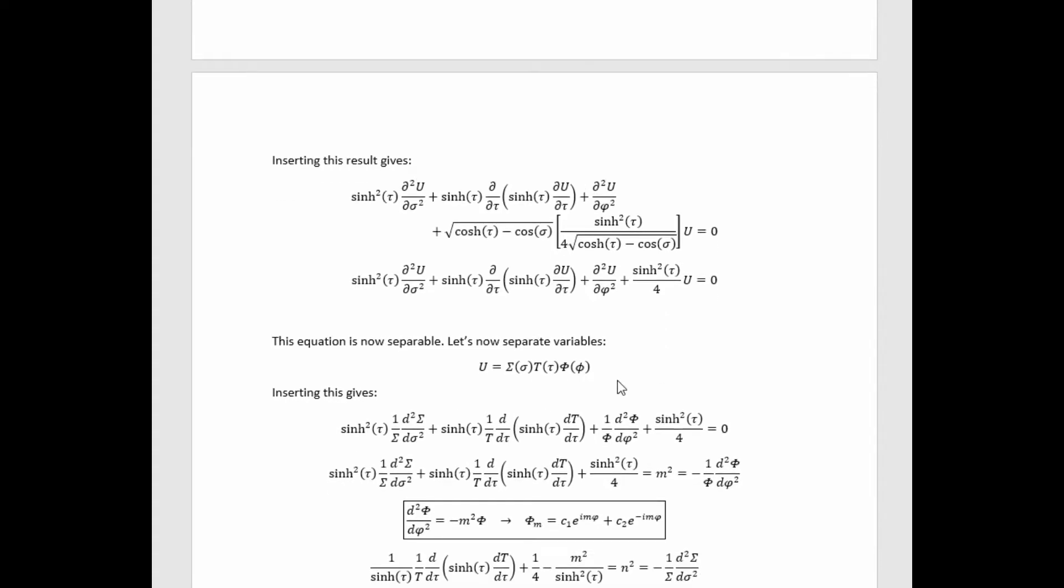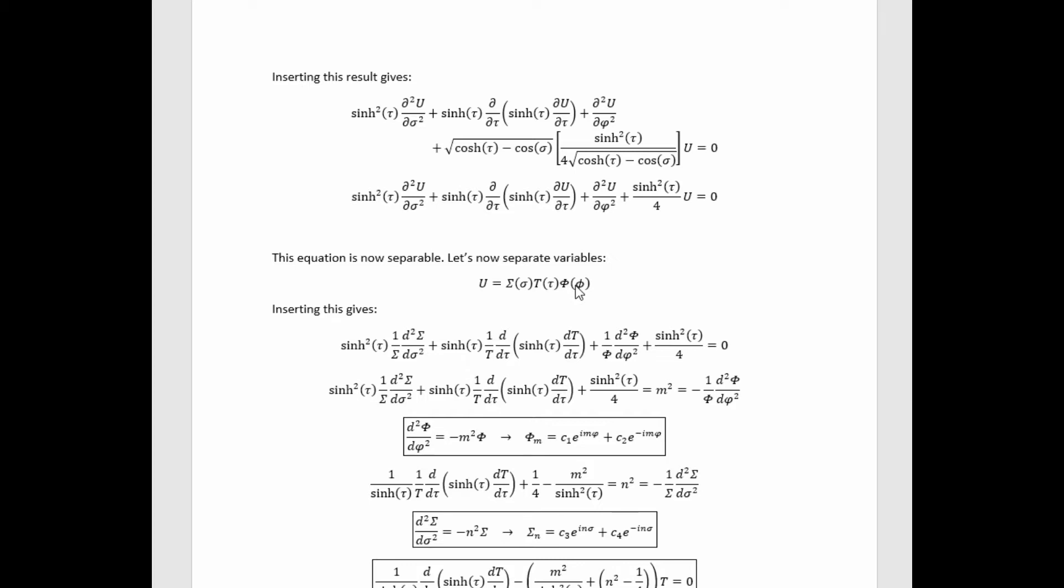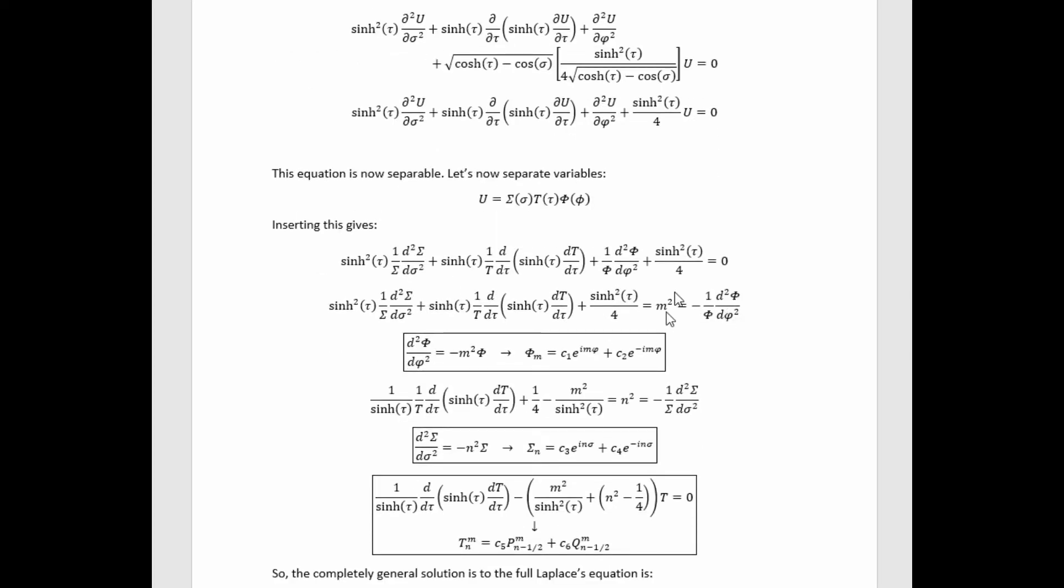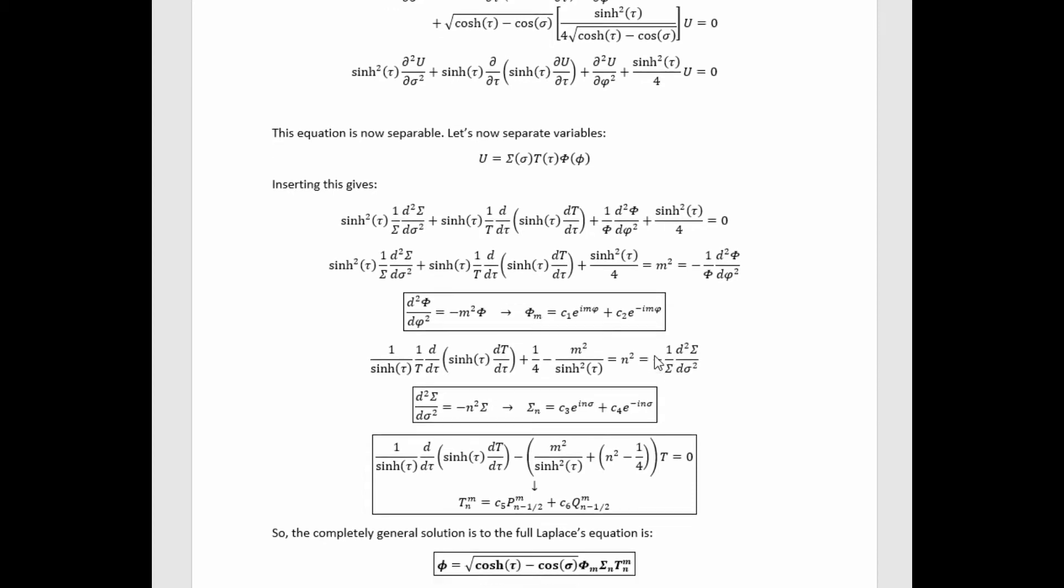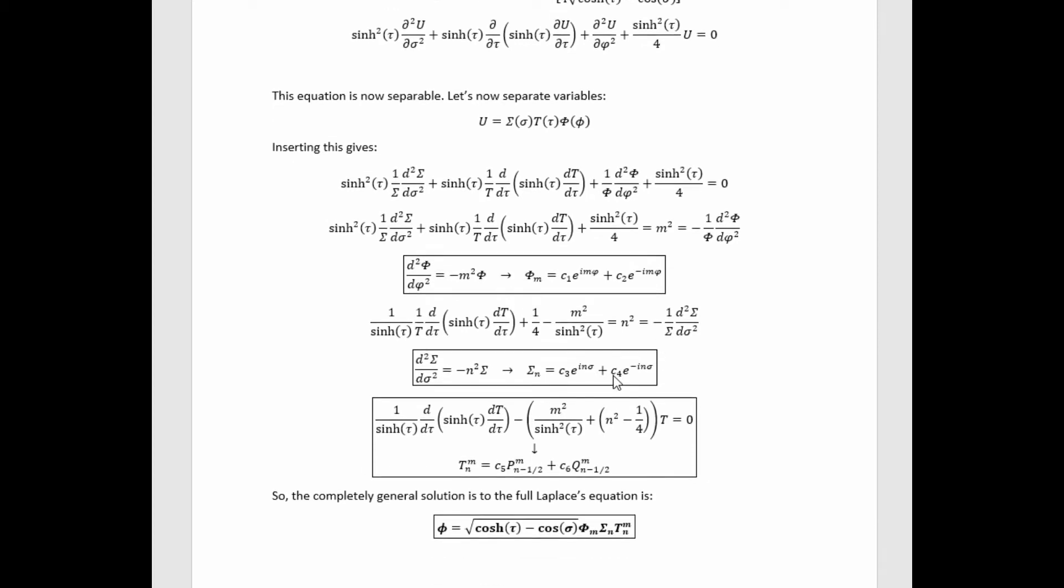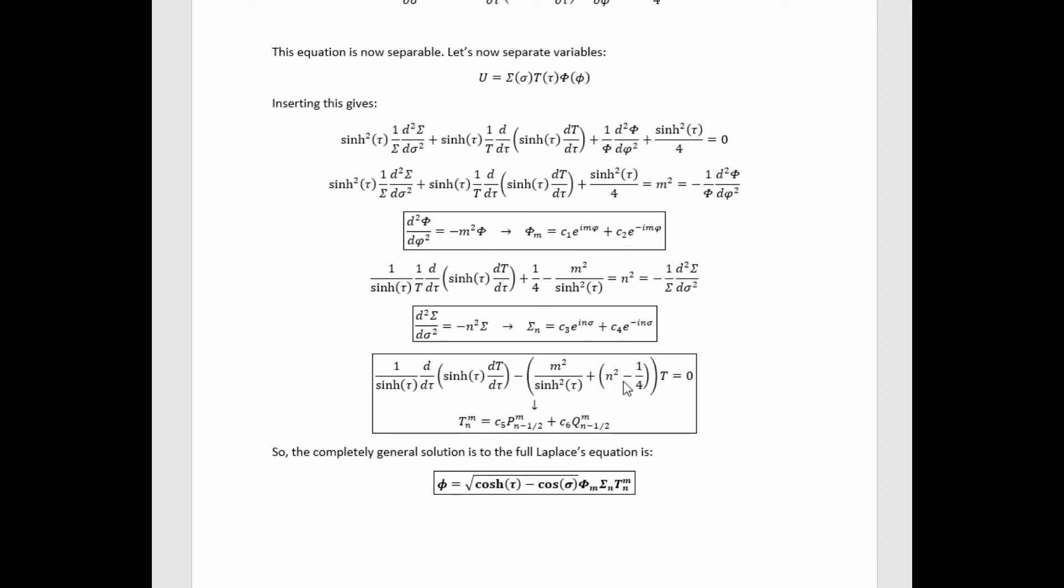So now let's separate variables. We have the standard ansatz for doing that. We can plug it in. I separated off the phi piece here first. It's just solved by phases. The sigma piece is also just solved by phases. However, the tau piece is definitely not. However, we can write down exact solutions for it quite easily because this is a relatively well-known version of the associated Legendre equation. Its solutions are simply given by this.